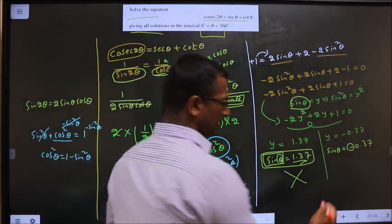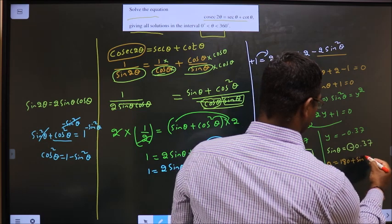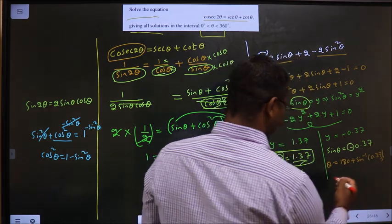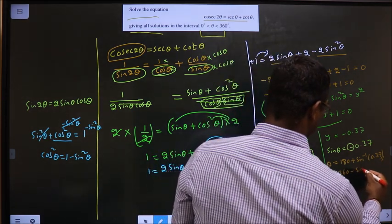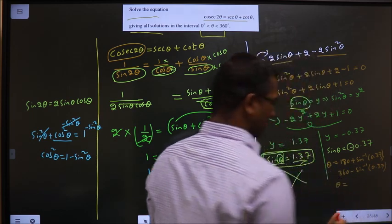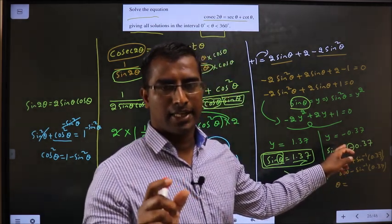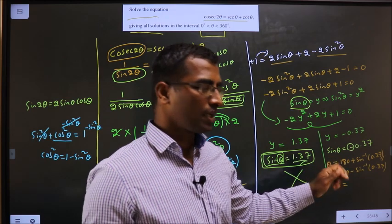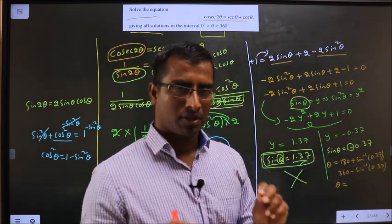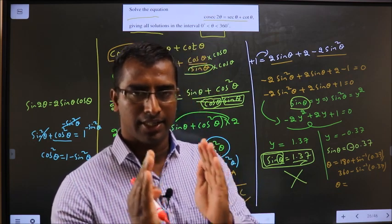To get an angle in the 3rd, it is 180 plus sin inverse 0.37. To get an angle in the 4th, it is 360 minus 0.37. This negative work is for selecting quadrants only. Once the quadrants are selected, don't take negative again here. That negative sign helps only to select quadrant.